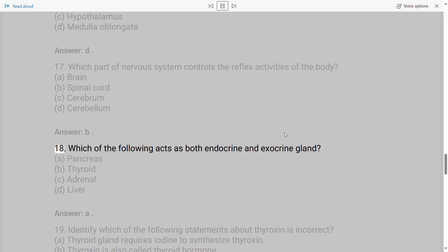18. Which of the following acts as both endocrine and exocrine gland? A. Pancreas B. Thyroid C. Adrenal D. Liver. Answer: A.